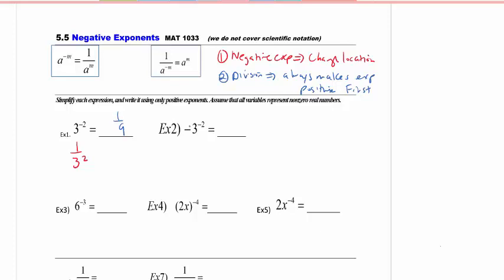Number 2, the negative in front is not included with the exponent. So we move the 3 down to make it positive. For the exponent only, the negative stays. So my answer is negative 1 over 9.